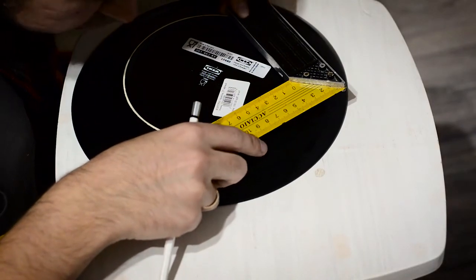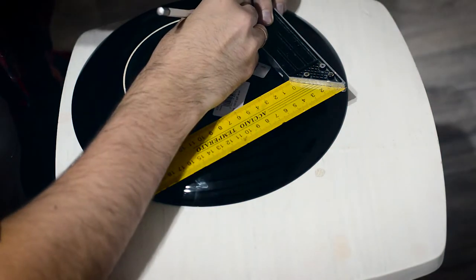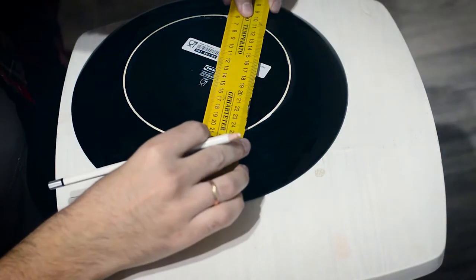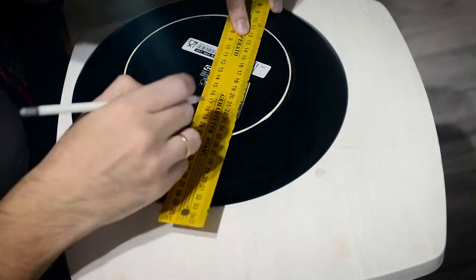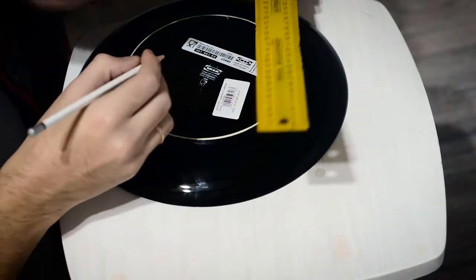First we need to find the center of the plate. I do this with the help of the set square. I enclose the right angle to the edge of the plate and I make a mark on the other two edges of the angle.